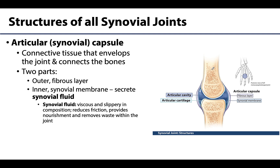There are four structures that all synovial joints have. The first is the articular or synovial capsule, which is the connective tissue actually connecting the bones to one another, enveloping the sides of the synovial joint and providing protection to the inner portions of the joint. It has two parts: an outer more fibrous layer that is continuous with the periosteum of the bones — the periosteum being a complex connective tissue covering of bone.